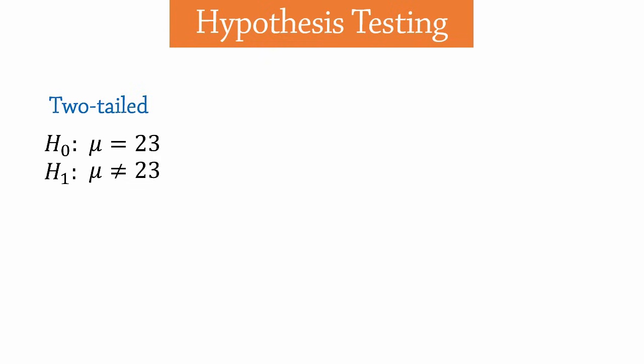Suppose instead we want to test if the mean is less than 23. Since this statement does not contain equality, we will assign it to the alternative hypothesis. And the null would be the opposite, that is, the mean is greater or equal to 23. And if we're testing if the mean is greater than 23, that would be the alternative hypothesis. And the null would be mean less or equal to 23.